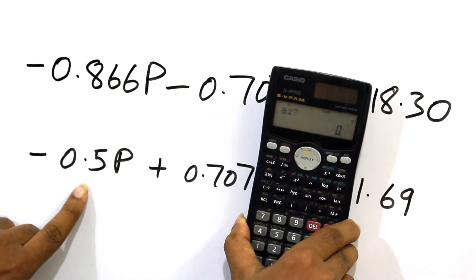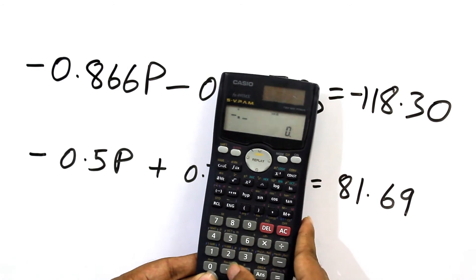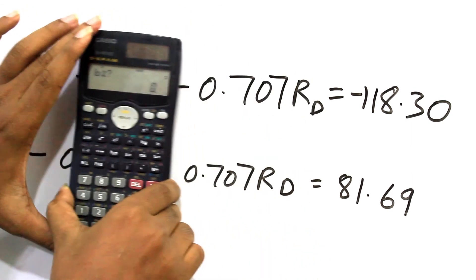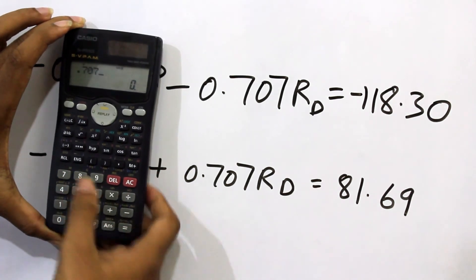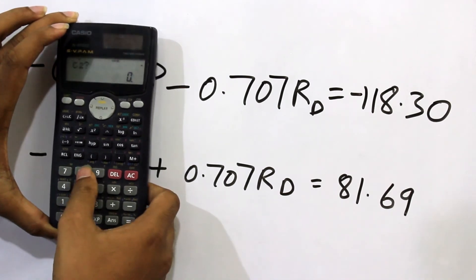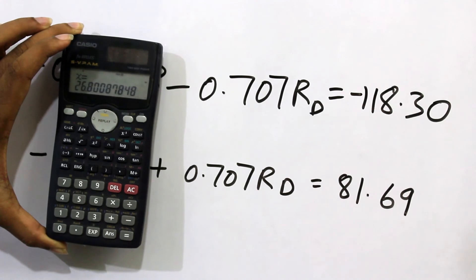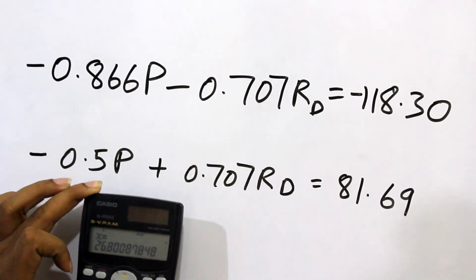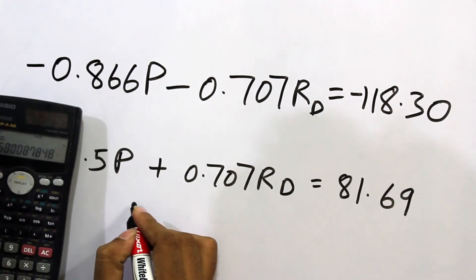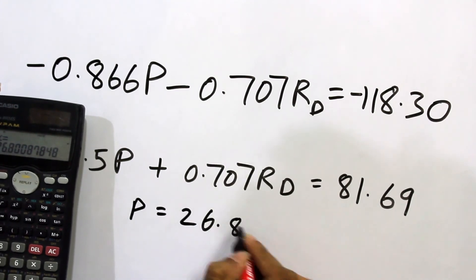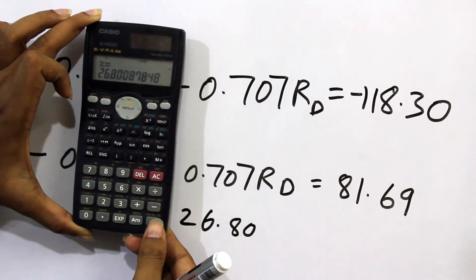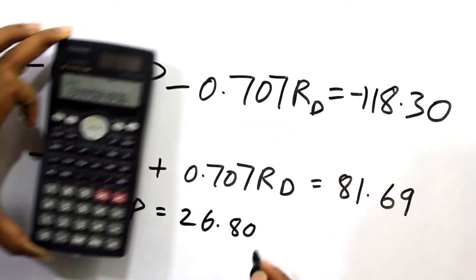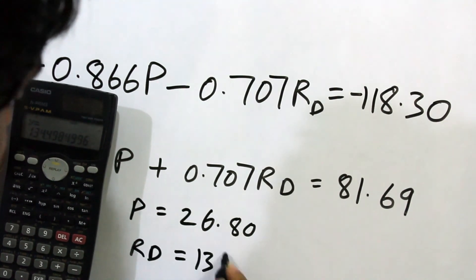We substitute the value of T in these two equations to get the final simplified equations. Using a scientific calculator — the Casio fx-991MS — press the mode button three times to get EQN mode for solving equations. Press 1 and then 2 for two unknowns. Enter A1 = minus 0.866, B1 = minus 0.707, C1 = minus 118.30, A2 = minus 0.5, B2 = 0.707, C2 = 81.69. We get X = 26.80, which is P, and Y = 134.49, which is Rd.